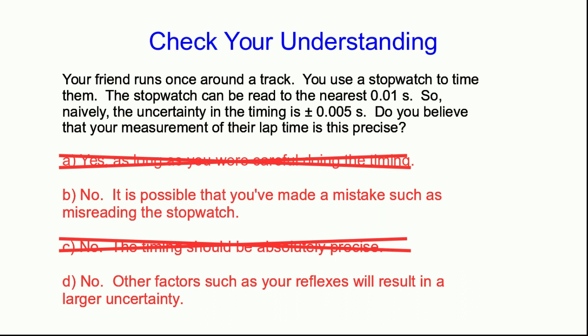It's also not B. The uncertainty or the precision in the measurements has nothing to do with mistakes. We're going to assume that all our measurements are correct.